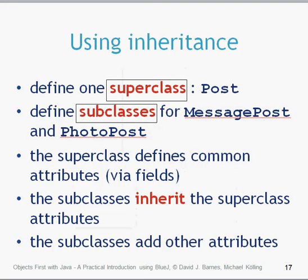Let's introduce some new terms. The superclass is the one above in the inheritance hierarchy - in our case it is the Post superclass. The subclasses are the classes below, which in our case are MessagePost and PhotoPost. The superclass defines the common attributes, and the subclasses inherit those superclass attributes so you don't need to write them again. The subclasses also add their own additional attributes.